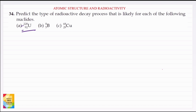In the case of Uranium, nucleides with atomic number greater than 83 undergo alpha emission. So in case of A, there will be alpha emission.